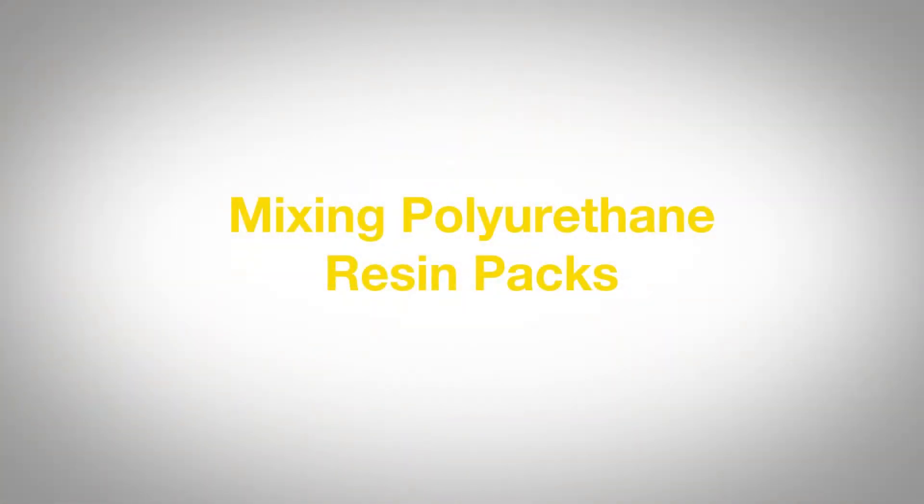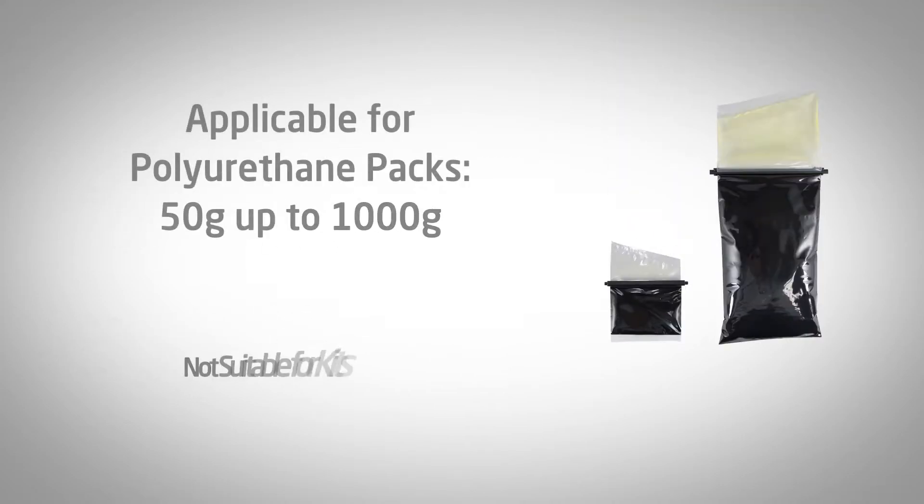Electrolube resin packs come in pre-measured packs ready to use. In this example video we are using a 250 gram resin pack which has a mix ratio of 2.5 to 1, but the process is essentially the same for all pack sizes.